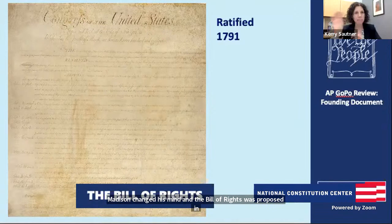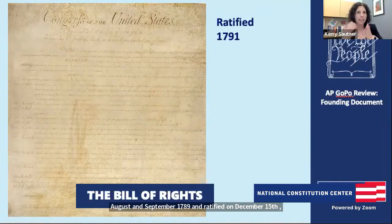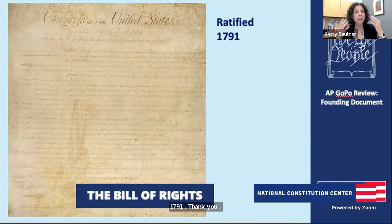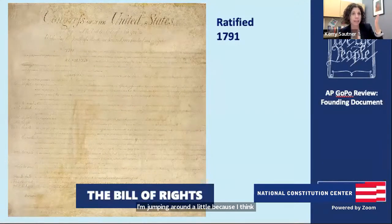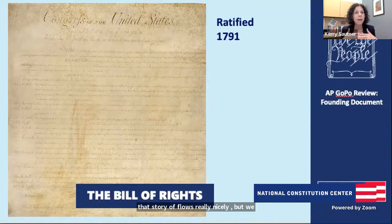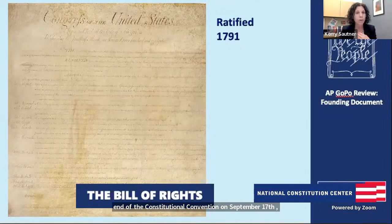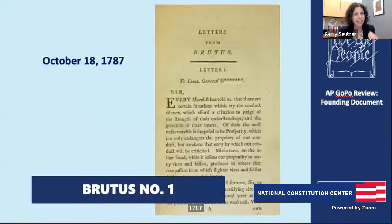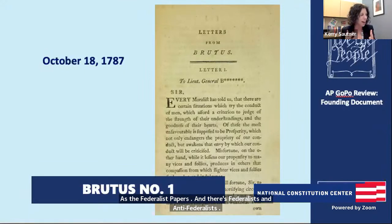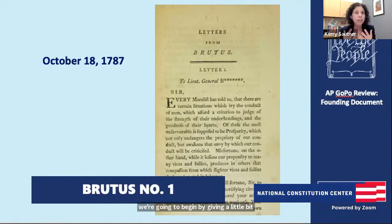The commentary that happened between the end of the Constitutional Convention on September 17, 1787 and the ratification of the Bill of Rights comes out as the Federalist Papers — and there are federalists and anti-federalists. We're going to begin by giving a little love to the anti-federalists, because they don't get enough attention. Brutus No. 1 is a really important document on the AP Gov exam, and it spells out fears of having a government that's too strong, too powerful.